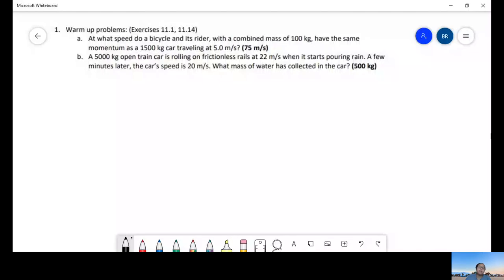Today we're going to solve problems 11.1 and 11.14. Let's solve part A. What speed do a bicycle and its rider, with a combined mass of 100 kilograms, have the same momentum as a 1,500-kilogram car traveling at 5.0 meters per second?